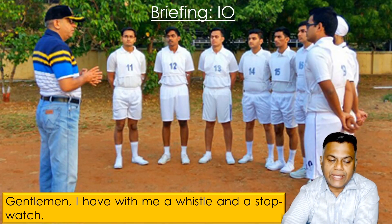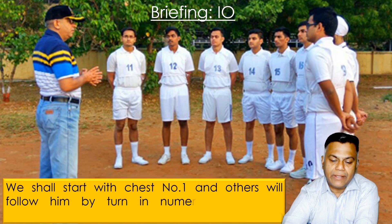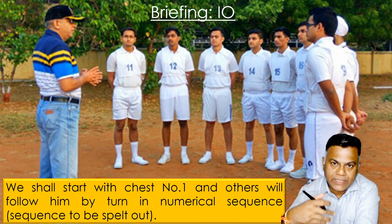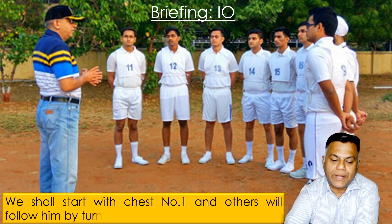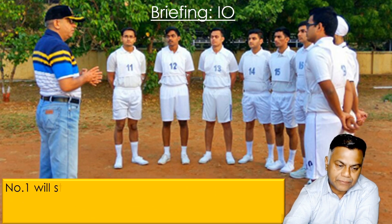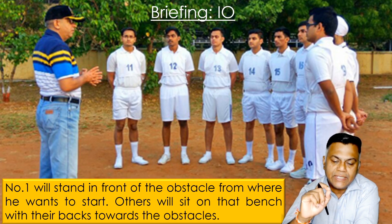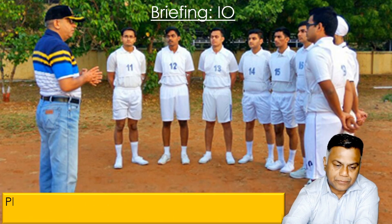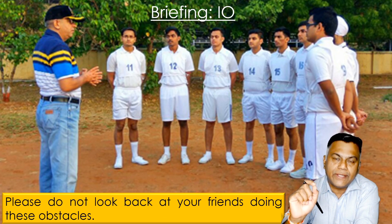Gentlemen, I have with me a whistle and a stopwatch. We shall start with chest number one and others will follow in numerical sequence. The sequence will be spelled out — whether it is one to ten or ten to one. Number one will stand in front of the obstacle from where he wants to start. Others will sit on the bench with their backs toward the obstacle. Please do not look back at your friends while they are doing the obstacles.